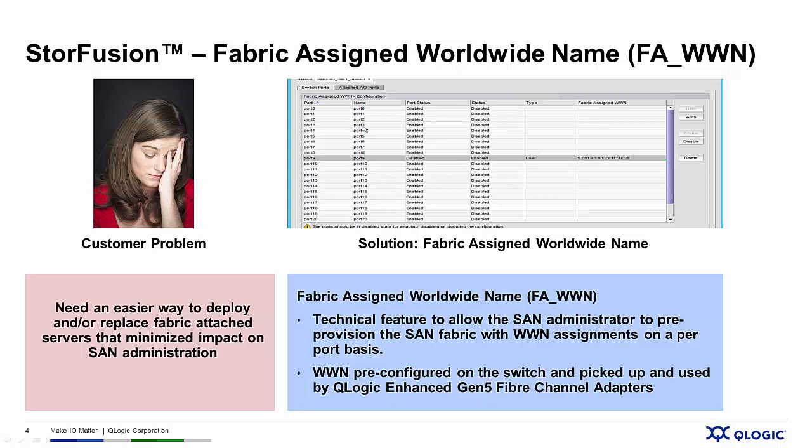What if Sarah could configure all the storage and switch hardware, and even zone the fabric, without having the servers on hand? That's exactly what Fabric Assigned Worldwide Name functionality provides. With QLogic Enhanced Gen5 Fiber Channel adapters and the Brocade Gen5 Fiber Channel fabrics, Sarah and her team can pre-configure worldwide names within the Brocade switches at the port level without even knowing what the worldwide name of the physical adapter is.